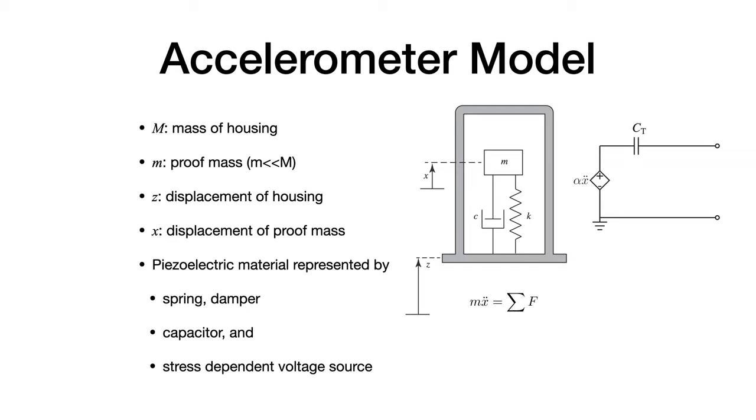If we were to draw a free body diagram for the mass, we would write the sum of the forces is equal to mass times acceleration. Writing out the forces, we would get forces from the spring and the damper.